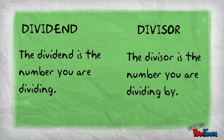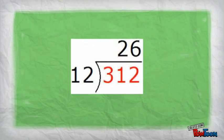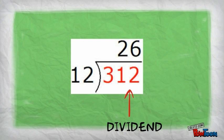Let's look at this problem. 312 divided by 12 equals 26. The number 312 is the dividend. The number 12 is the divisor.